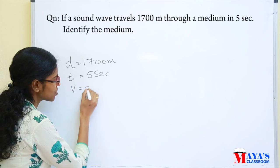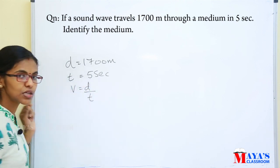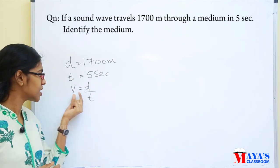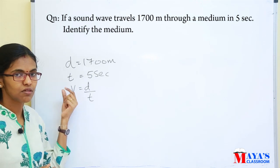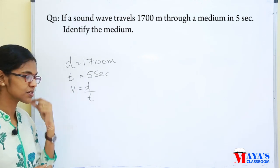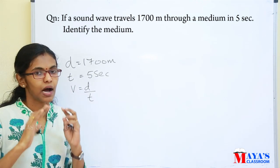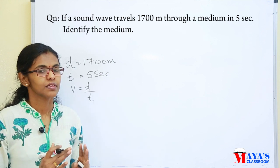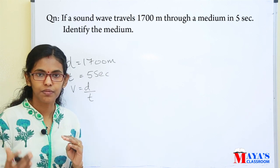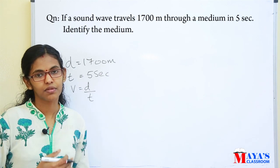So, if we look at velocity — we are going to find the speed. If we know the speed, we are going to be able to identify what medium we have to identify.